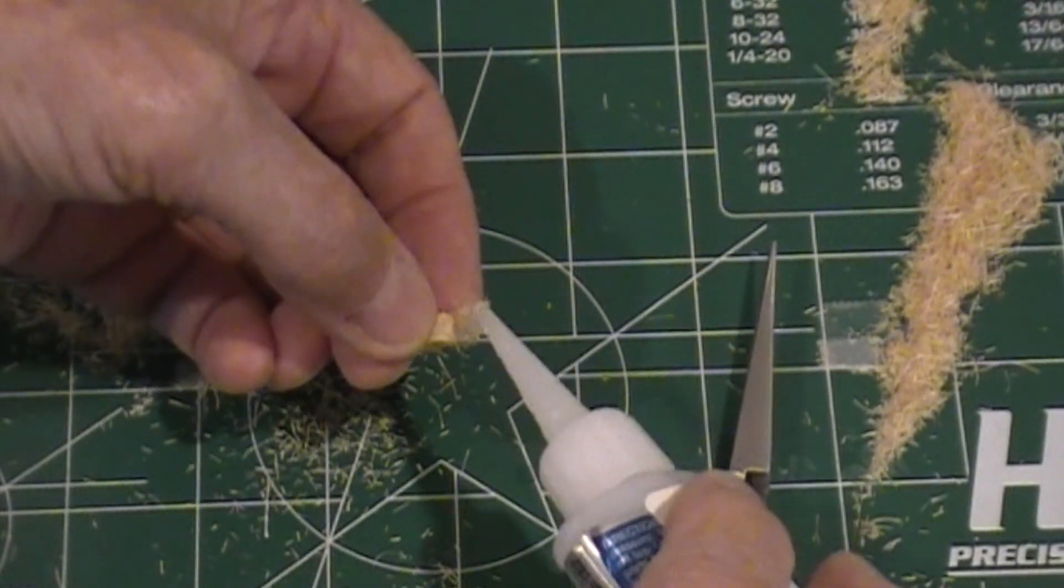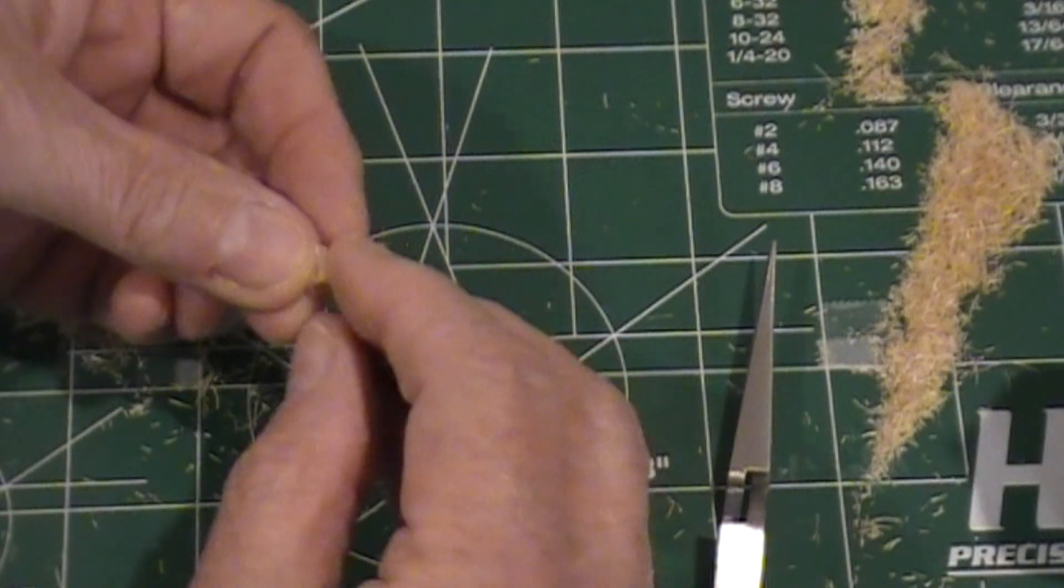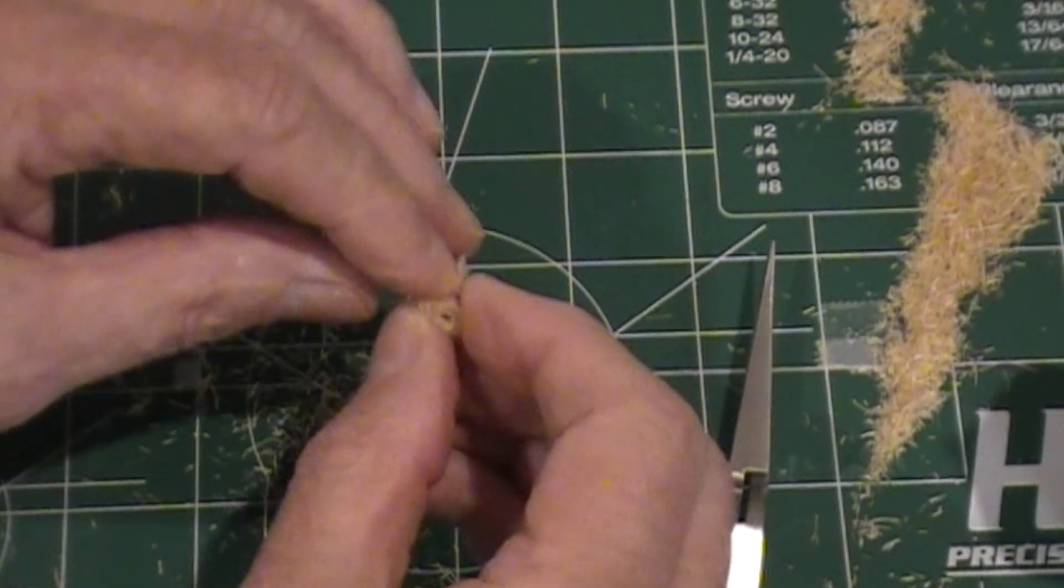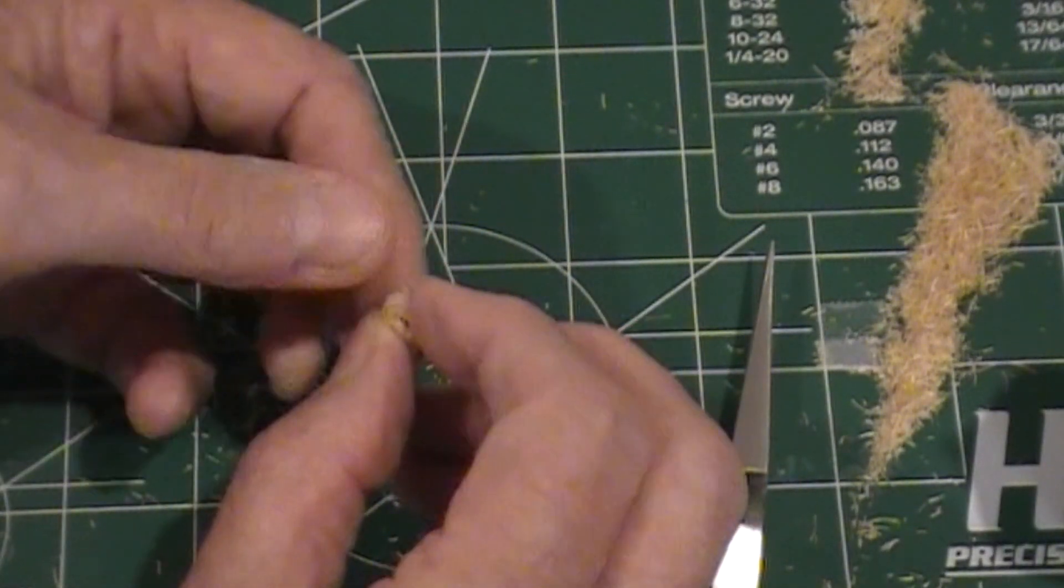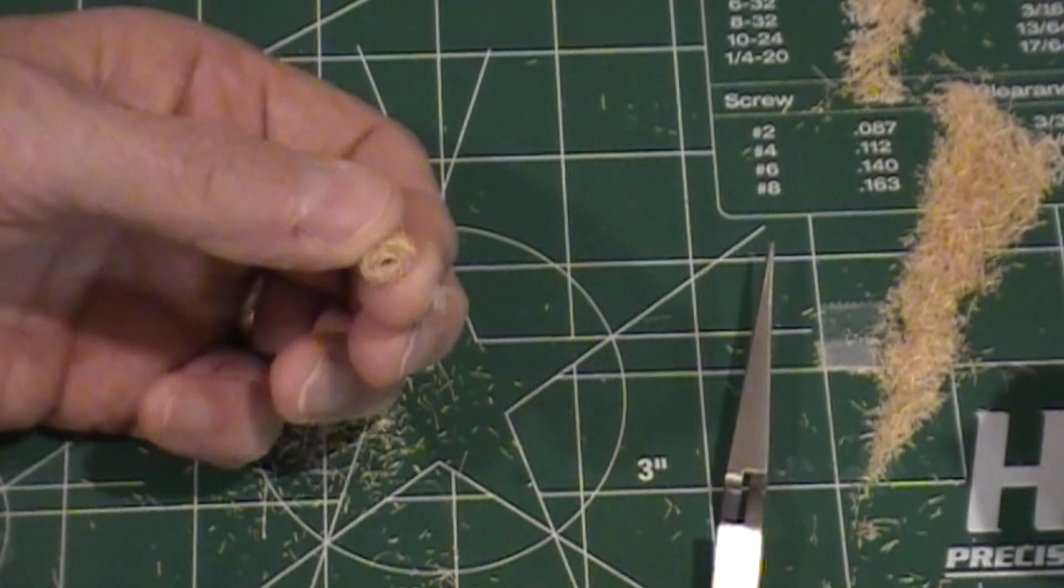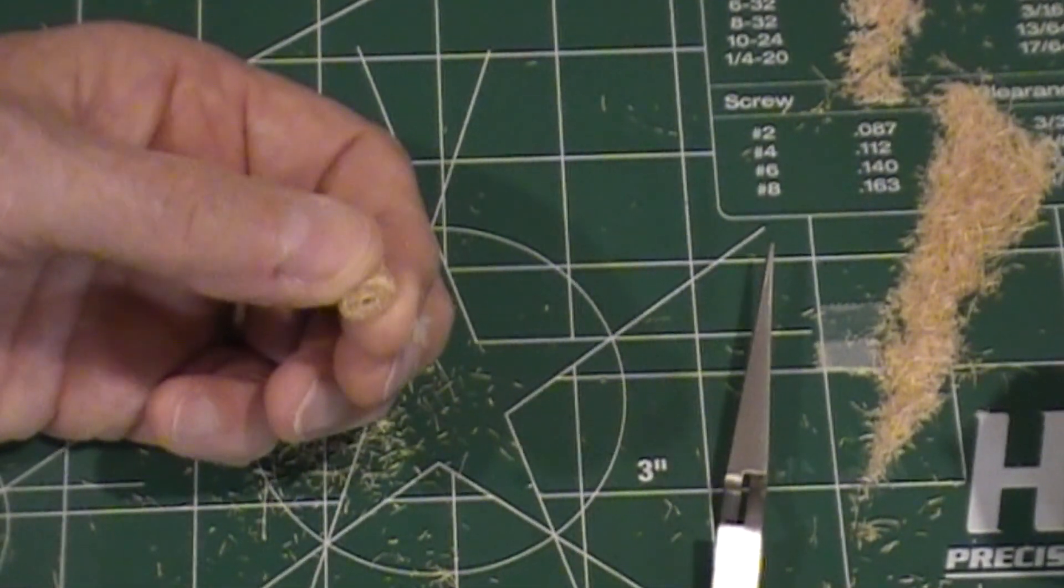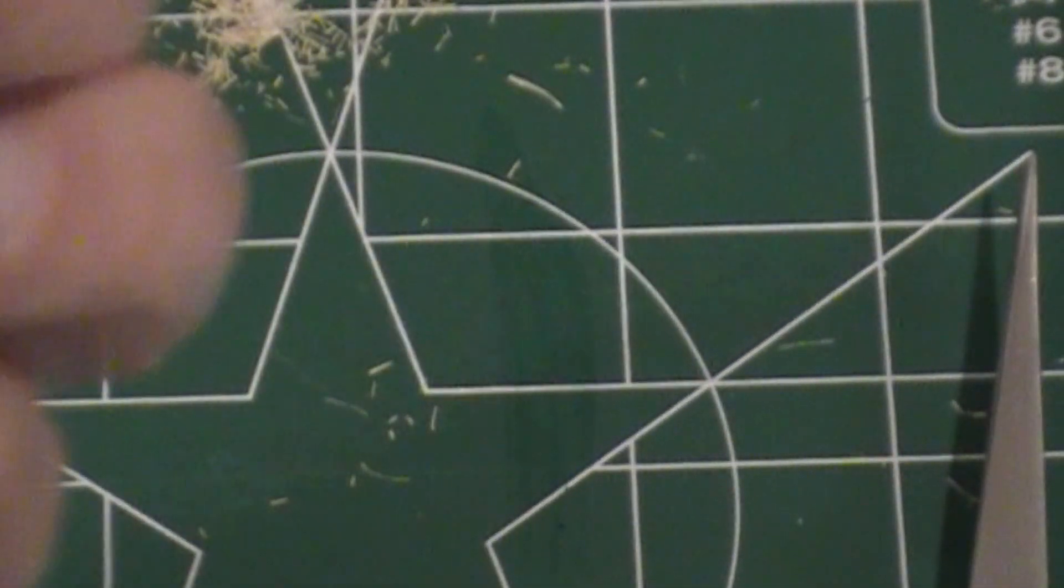A small dab of CA glue, without trying to get the finger stuck to it. And hold that over on there. Okay, now we have our hay bale.